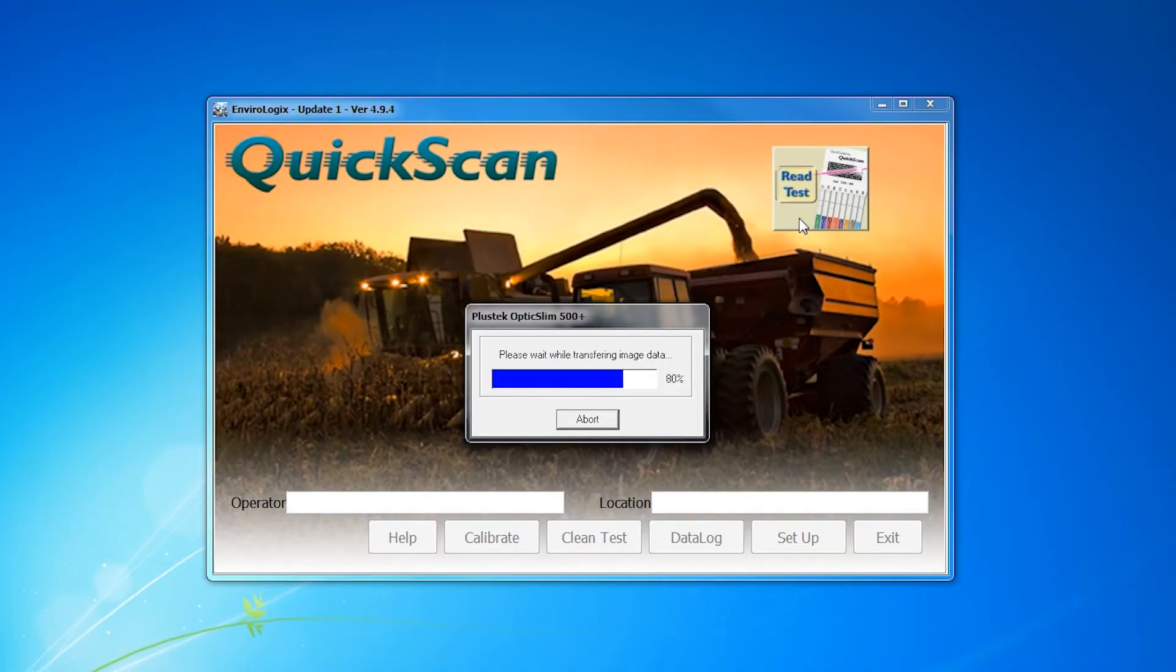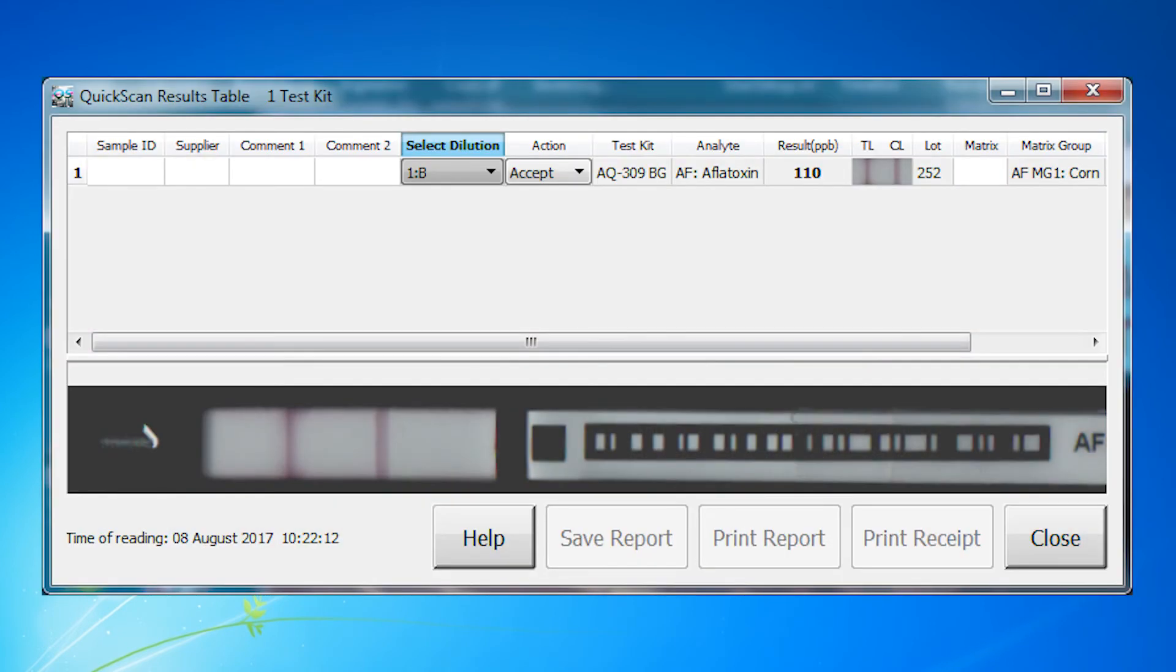Step 6. On the quick scan results screen, choose 1B under the dilution tab drop-down menu. The system will calculate and record the aflatoxin level in the diluted sample.